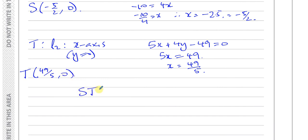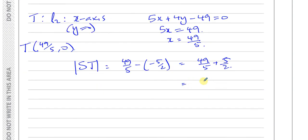So the distance between S and T is going to be the difference between these coordinates. So it's 49 over 5 minus minus 5 over 2, which is 49 over 5 plus 5 over 2. Make the denominator the same. We have to multiply this by 2. This is going to be 98 over 10 plus, multiply by 5, 25 over 10. So we have 98 plus 25. So 90 plus 20 is 110 plus 13, 123 over 10. So that's the distance between S and T.